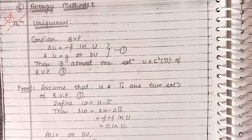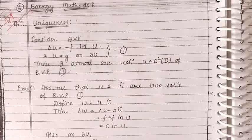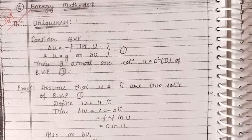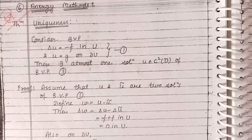Good morning students. In the previous lecture we discussed Green's function for a ball, and today we will discuss energy methods. Energy method is a technique to prove the uniqueness of solution of a given boundary value problem. Today we will discuss the uniqueness of the solution of the boundary value problem for Poisson's equation.